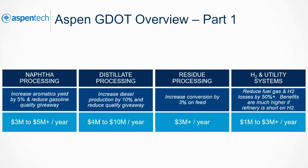Implementation of GDOT in real plants has created value. The naphtha processing example increased aromatics yield by 5% and reduced gasoline quality giveaway, leading to an additional $3–5 million per year. The distillate processing implementation led to a 10% increase in diesel production and an improvement of quality, generating an additional $4–10 million per year. Finally, using GDOT to optimize hydrogen and utility systems has led to an additional $1–3 million per year.